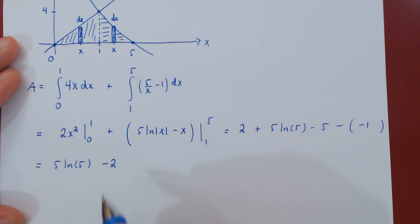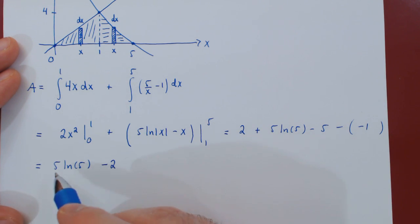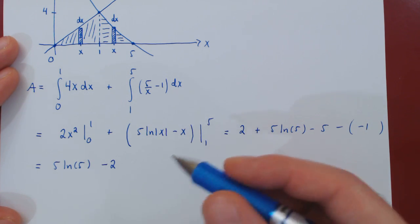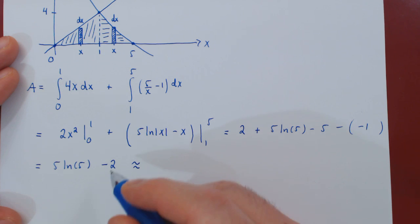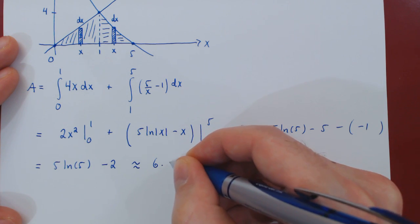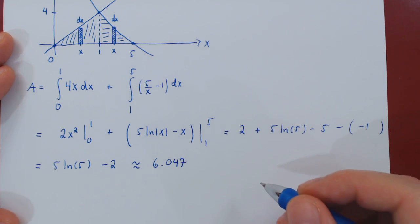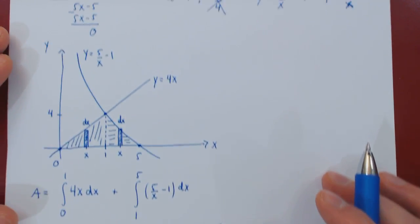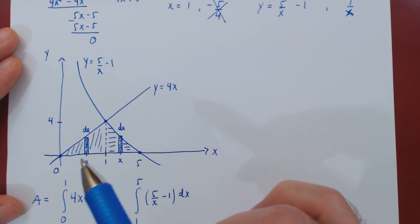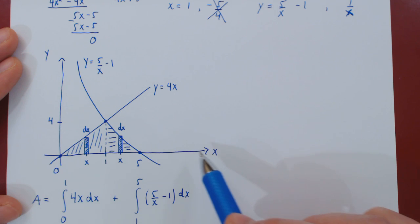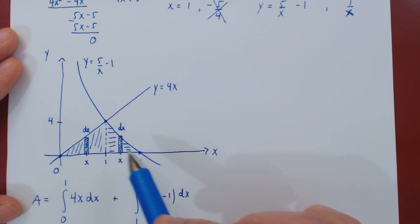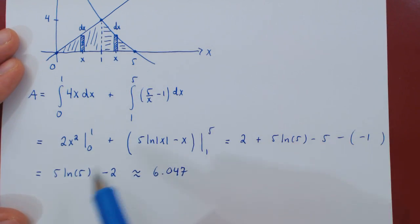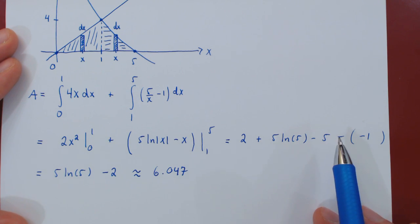Now we have the exact area of the region: 5 ln of 5 minus 2. But it's nice to get a feeling for how large or how small is the area of the region. If you use your calculator, you'll find that 5 ln of 5 minus 2 is approximately 6.047. Our conclusion is that if we look in the first quadrant of the xy plane, the area of the region bounded by the x-axis y equals 0, the line y equals 4x, and the curve y equals 5 over x minus 1, is 5 ln of 5 minus 2, which is approximately 6.047.